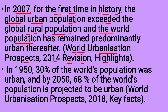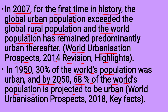In 2007, for the first time in history, the global urban population exceeded the global rural population. In 1950, 30% of the world's population was urban. By 2050, 68% of the world population is projected to be urban.